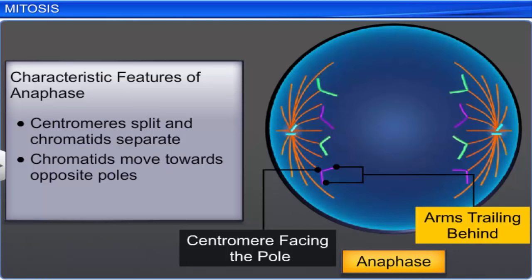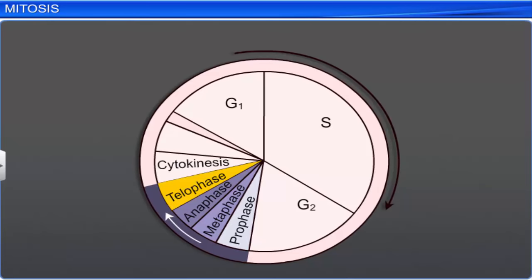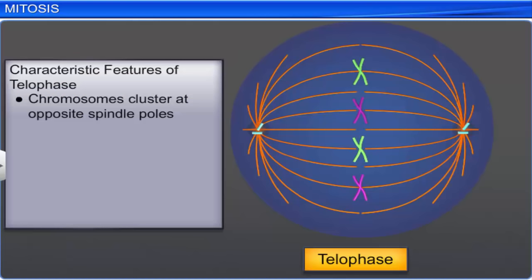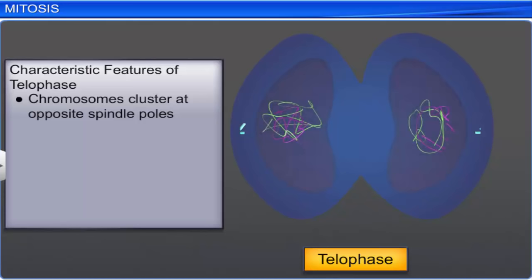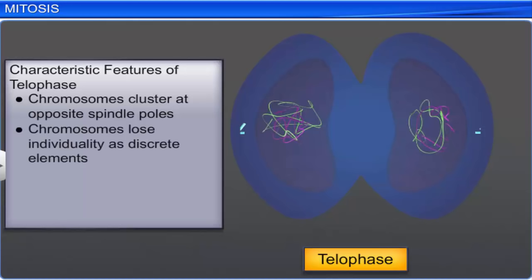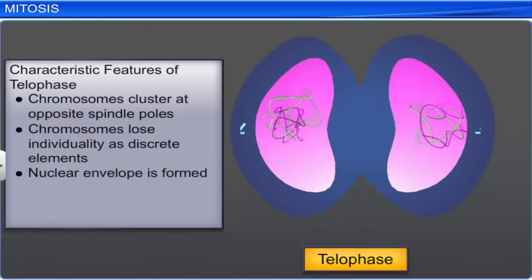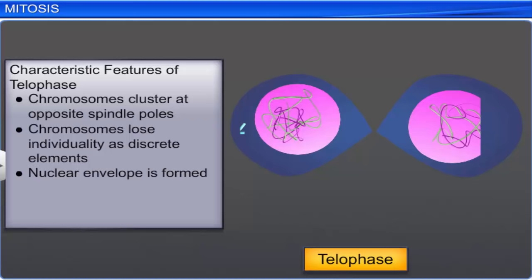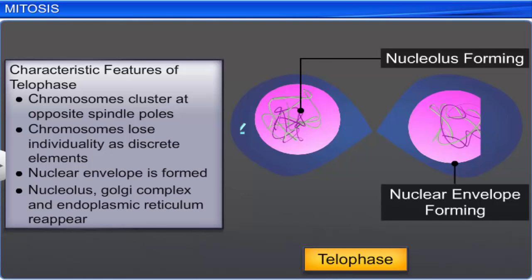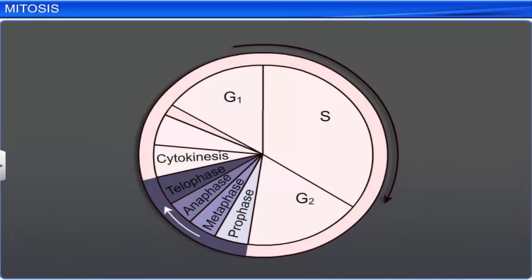The final stage of mitosis is telophase. This stage is characterized by the chromosomes clustering at opposite spindle poles. Then the chromosomes decondense or lose their individuality as discrete elements, and a mass of chromatin material tends to collect at the two poles. Moreover, a nuclear envelope is formed around each chromosome cluster, and the nucleolus, Golgi complex, and endoplasmic reticulum reappear at both poles. Thus, mitosis is divided into four stages, at the end of which a cell segregates its chromosomes into two identical sets in two daughter nuclei.